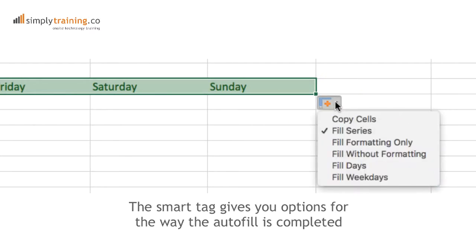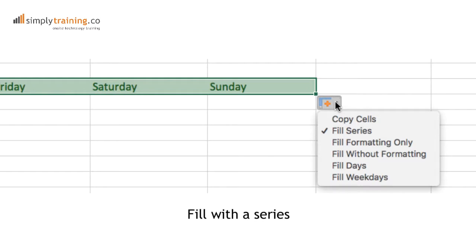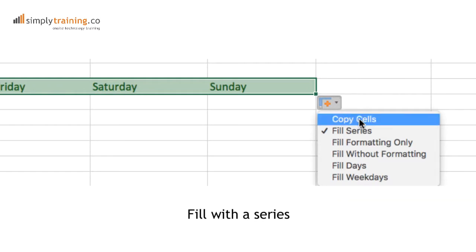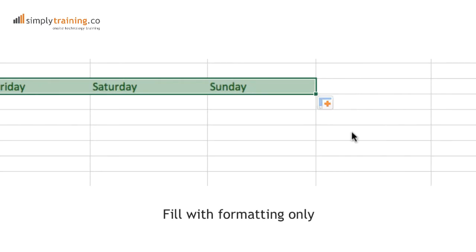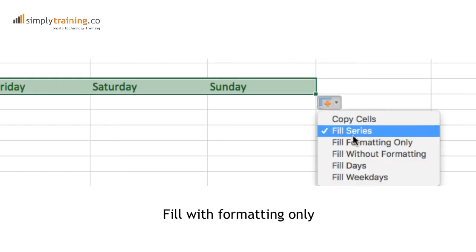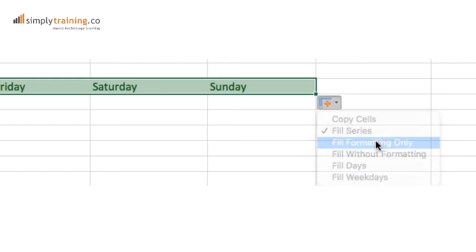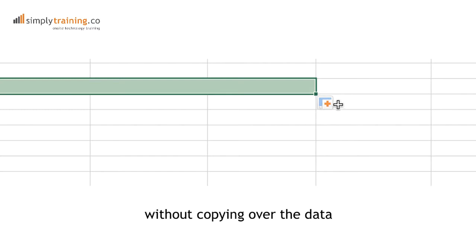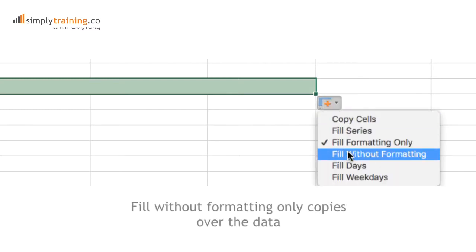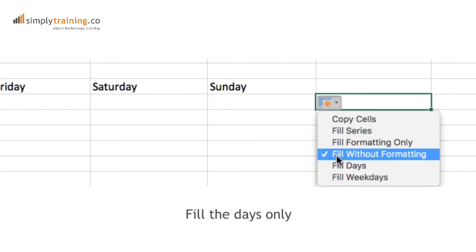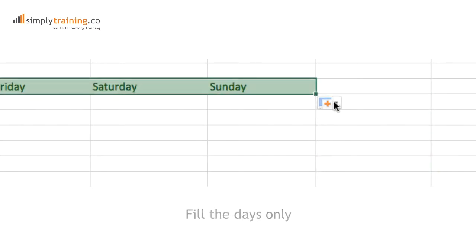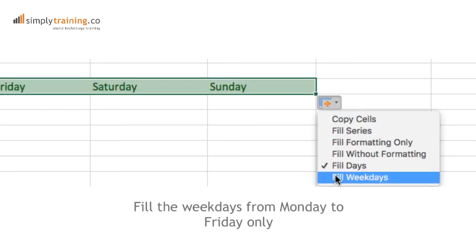I can fill it with a series, which is the default in this instance. I can copy the first cell, which means Monday would be repeated. I can fill it with the formatting only — a good way to copy formatting from one place to another without overwriting the existing data. Fill without formatting, so that only the data is copied. Fill the days. Fill with the weekdays.